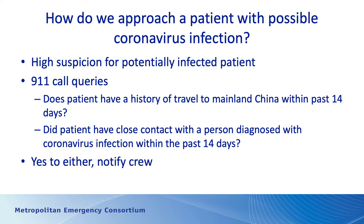For Ohio EMS providers approaching a patient with possible infection: maintain a high index of suspicion for any patient with an acute respiratory illness. We have worked with 911 call centers to make inquiries. For general illness calls, dispatchers ask whether the patient has a history of travel to mainland China within the past 14 days, or had close contact with a patient diagnosed with COVID-19 within the previous 14 days. If the answer is yes to either question, the patient is considered potentially infected and the crew should be notified to take appropriate action before arrival and during patient care.